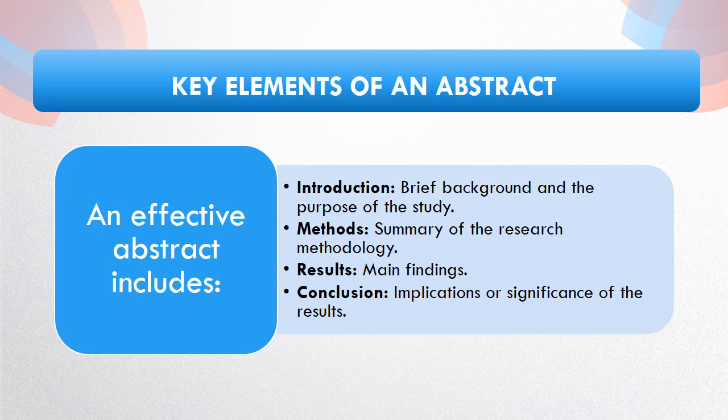A descriptive abstract comprises four essential elements: an introduction that offers a concise background and states the study's purpose, a summary detailing the research methods employed, a presentation of the main results obtained, and a conclusion that underscores the implications or significance of these findings. By incorporating these elements, your abstract becomes comprehensive and informative, providing readers with a clear overview of the study's context, methodology, results, and broader implications. This structure enhances the abstract's ability to effectively convey the essence and impact of your research paper.